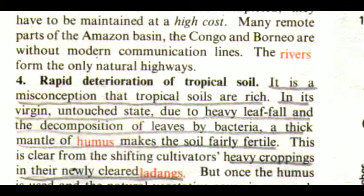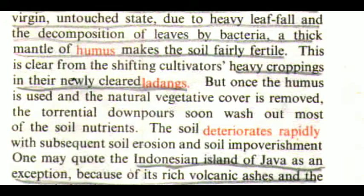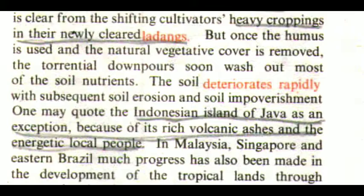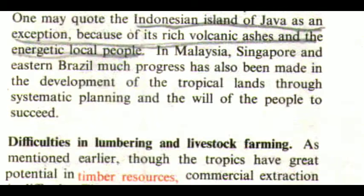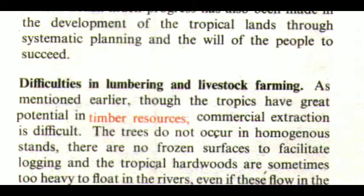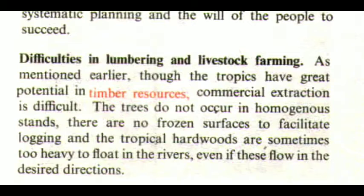The fourth factor is the rapid deterioration of tropical soil. It is a misconception that tropical soils are rich. In their virgin untouched state, heavy leaf fall and decomposition by bacteria create a thick mantle of humus that makes the soil fairly fertile — as evidenced by shifting cultivators' heavy croppings in newly cleared land. But once the humus is used and the natural vegetative cover is removed, torrential downpours soon wash out most soil nutrients, leading to rapid soil deterioration, erosion, and impoverishment. Java is an exception due to its rich volcanic soil. In Malaysia, Singapore, and eastern Brazil, much progress has been made through systematic planning.